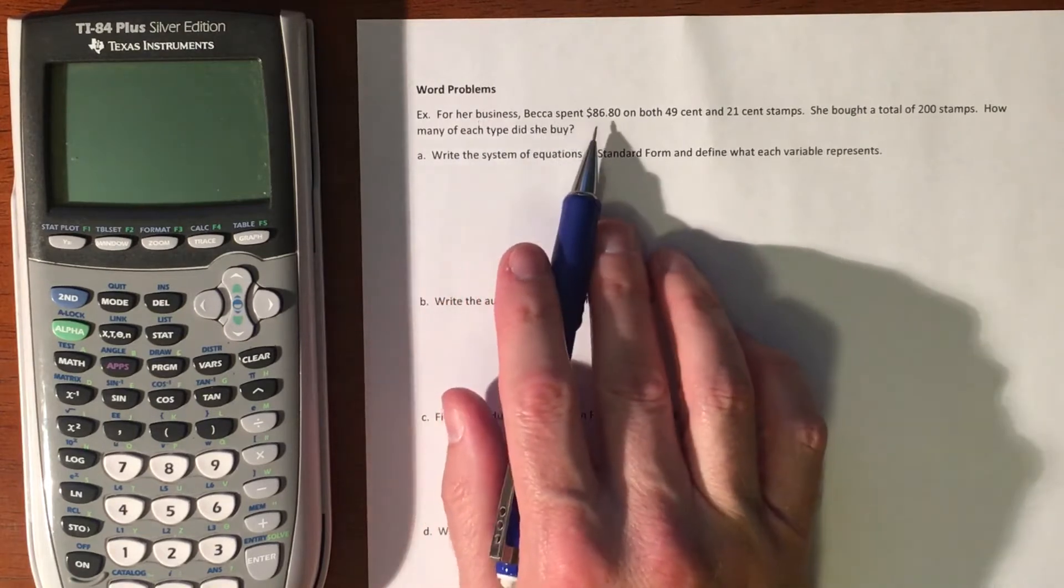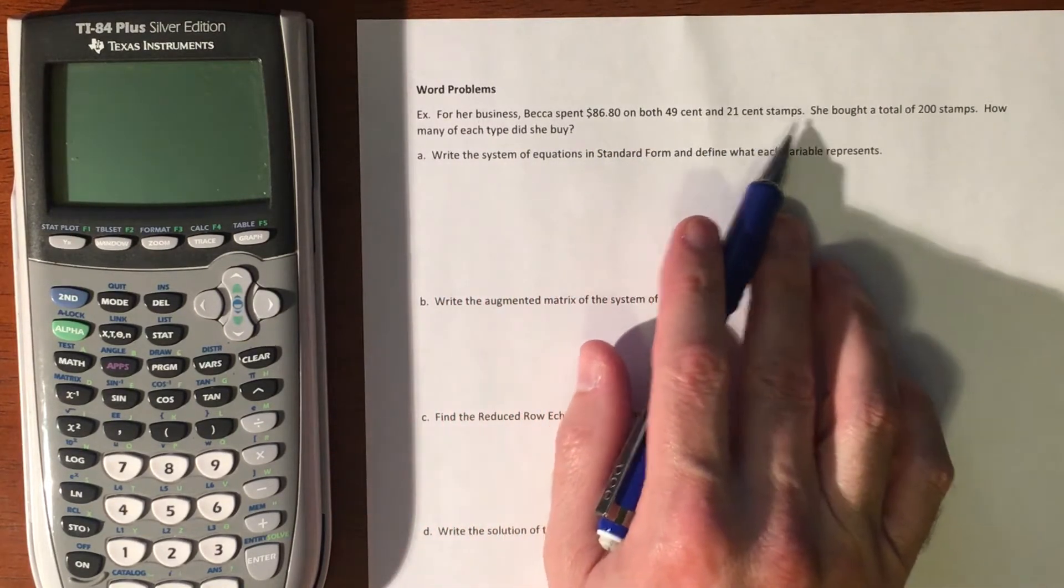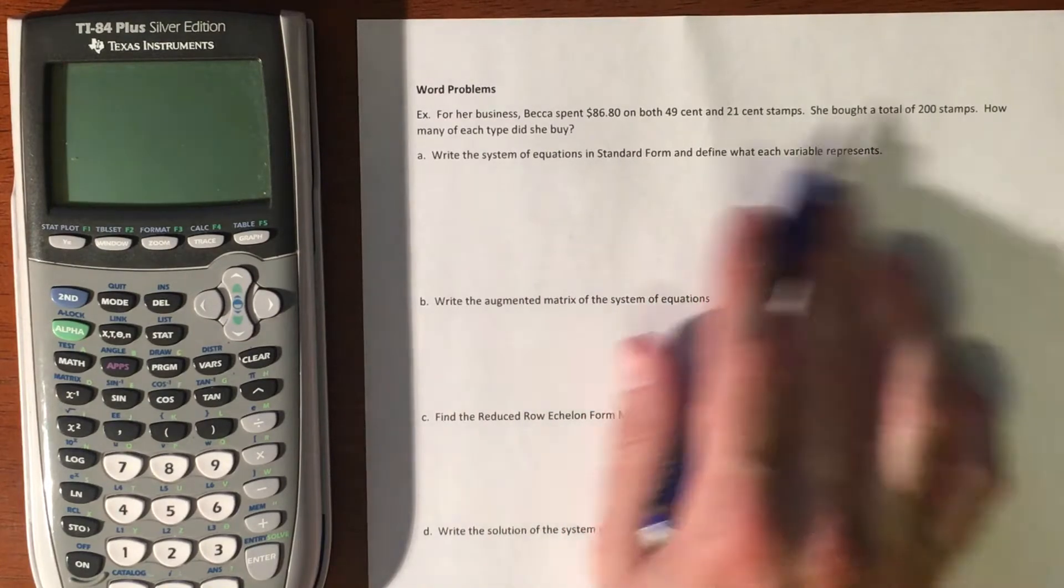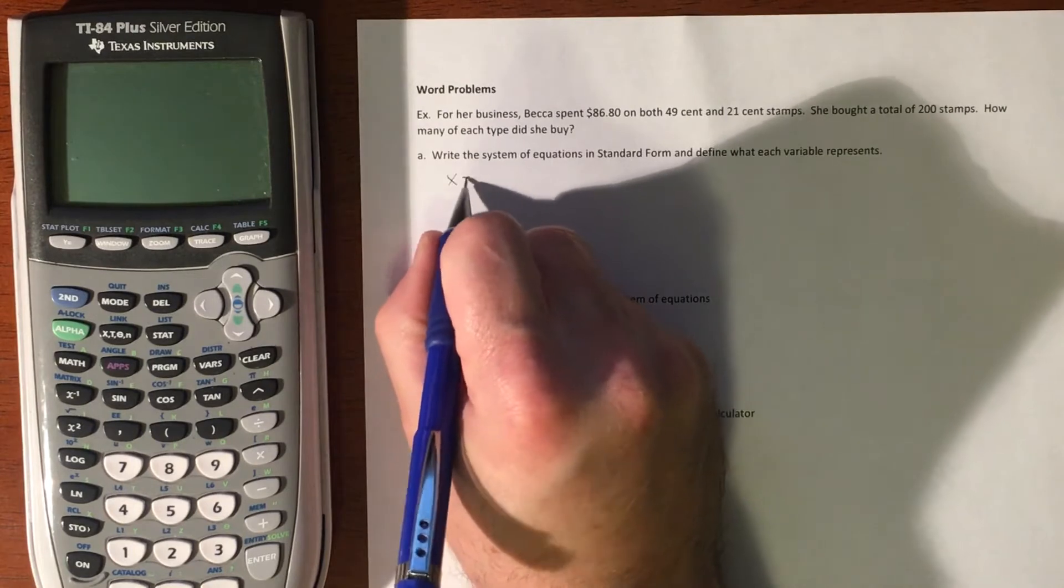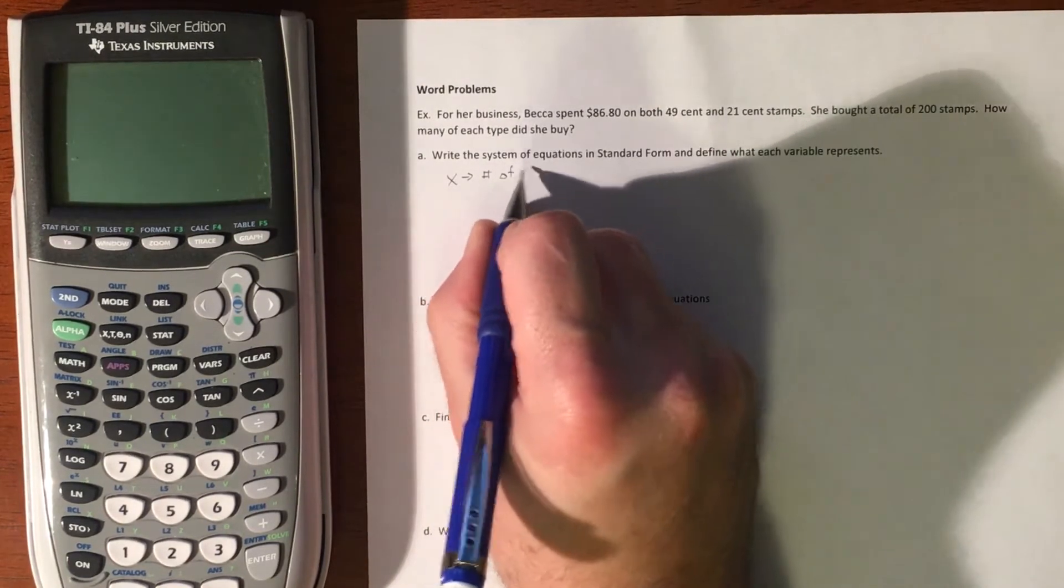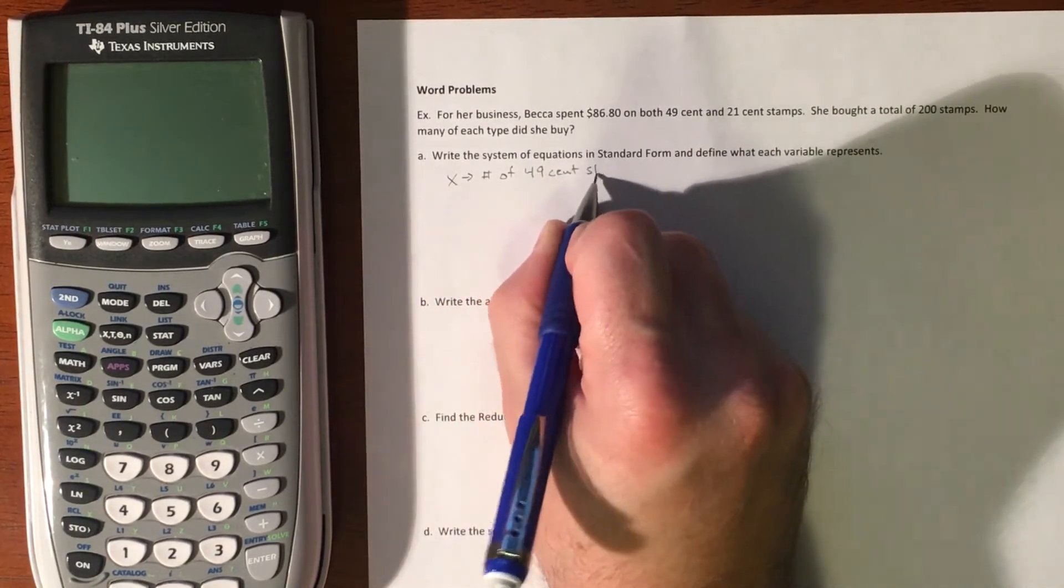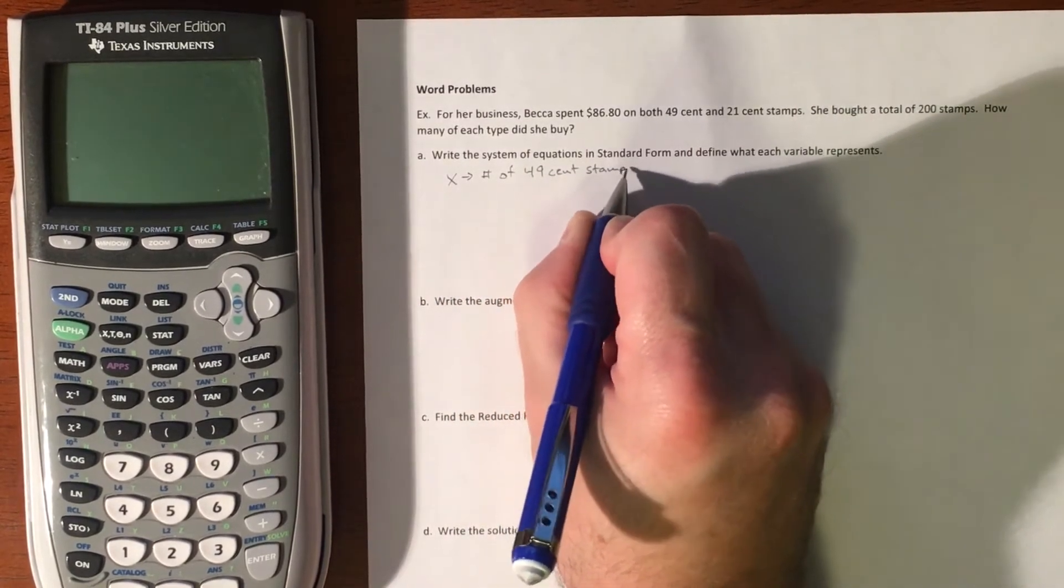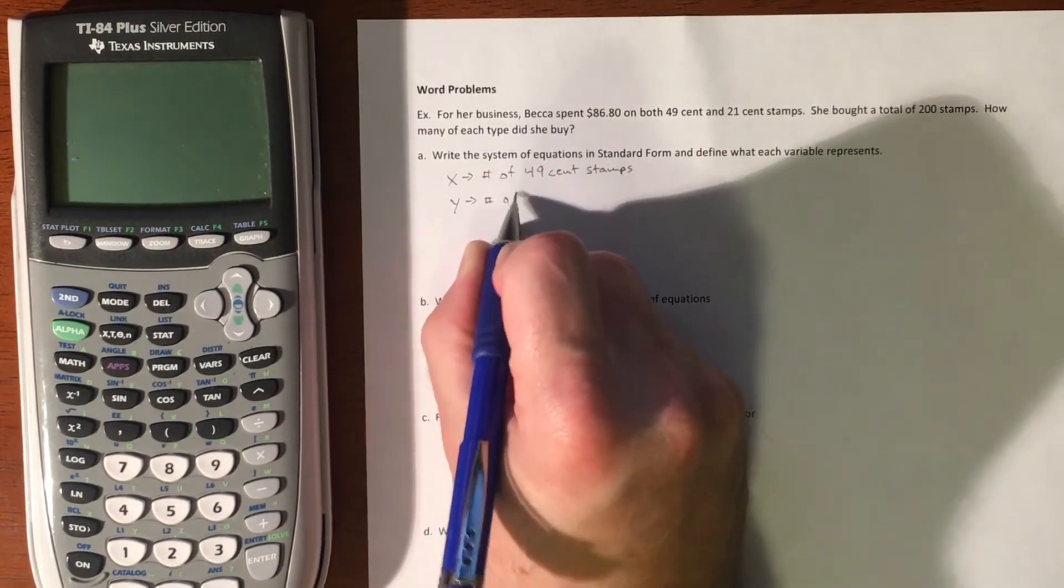For her business, Becca spent $86.80 on both 49 cent and 21 cent stamps. She bought a total of 200 stamps. How many of each did she buy? Let's say X represents the number of 49 cent stamps and Y represents the number of 21 cent stamps.